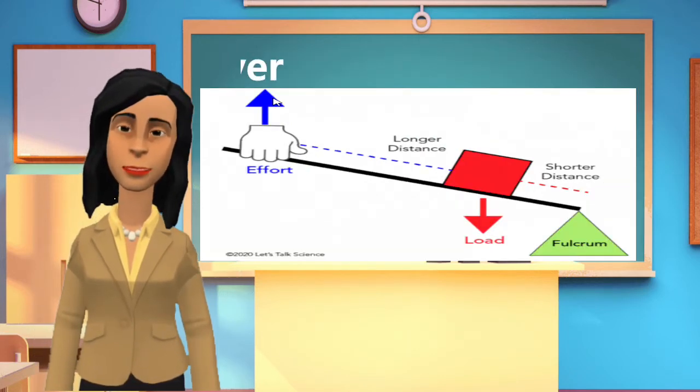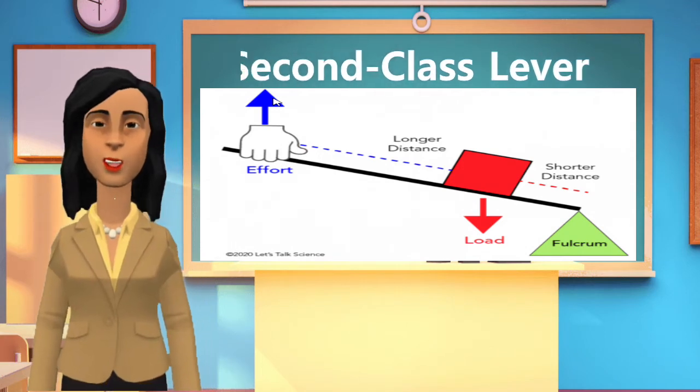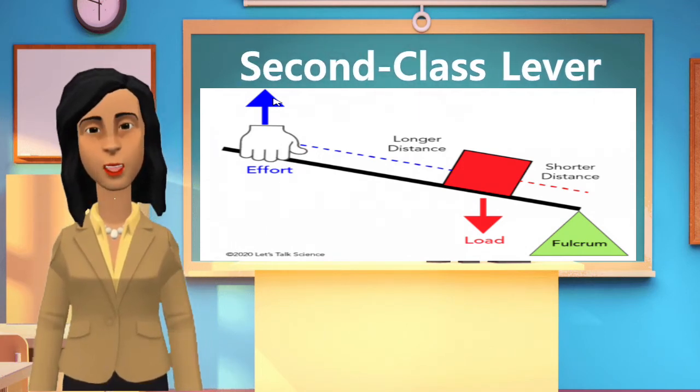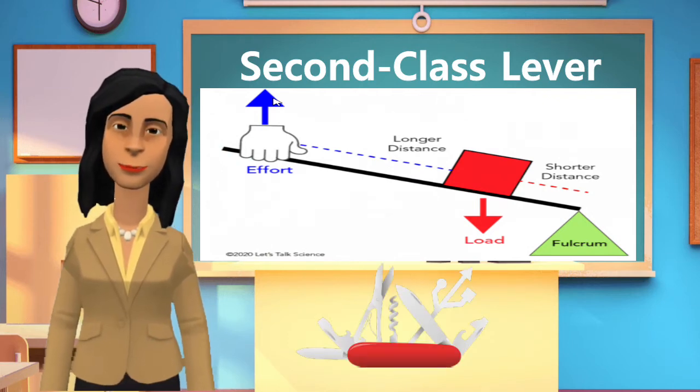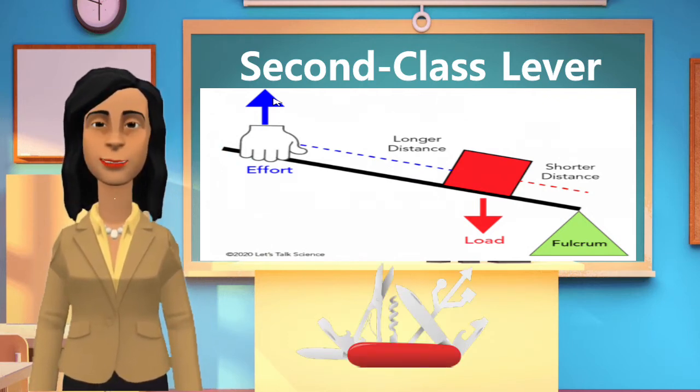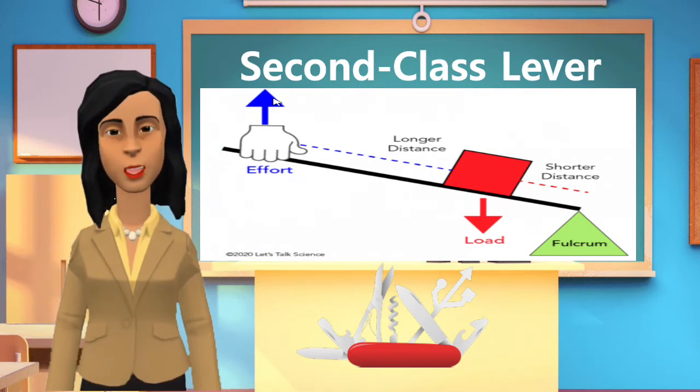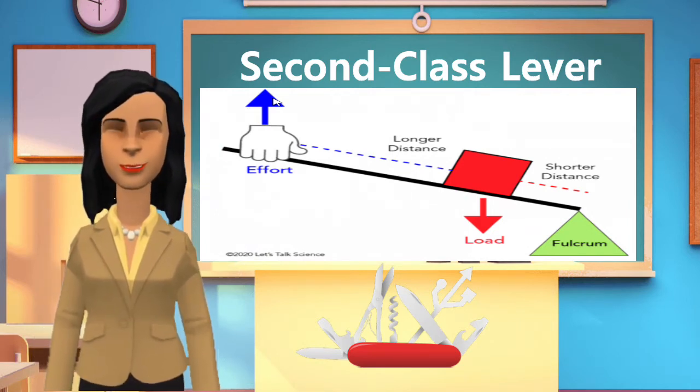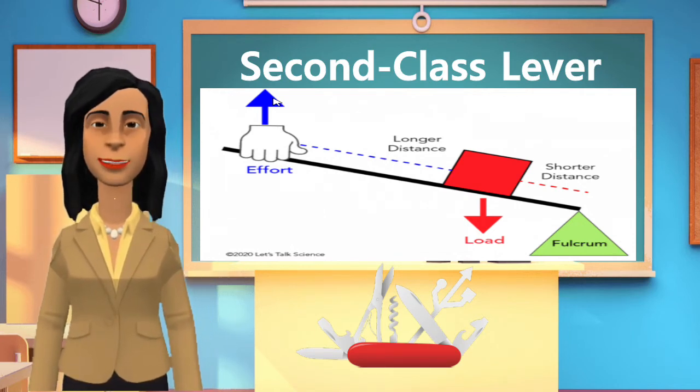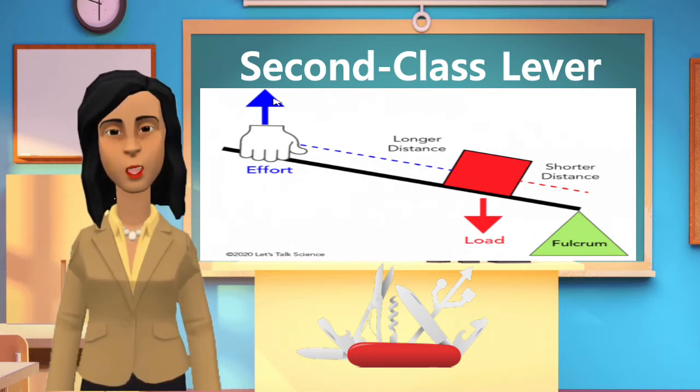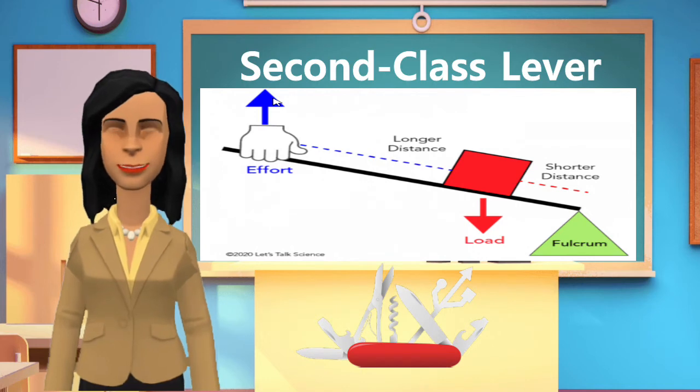Second class lever is a lever with a load between a fulcrum and effort. In your activity, the bottle opener you manipulated is a second class lever. The bottle cap, which is the load, is at the middle of the fulcrum, the part of the opener touching the surface of the bottle cap, and the effort at the handle.